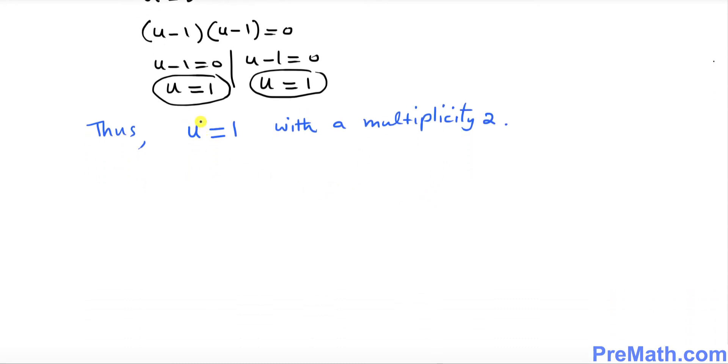Now we're going to go ahead and revert it back u to our original x variable. u was equal to 7^x. So this thing becomes simply 7^x equals to 1.